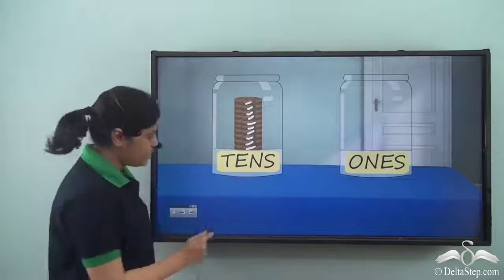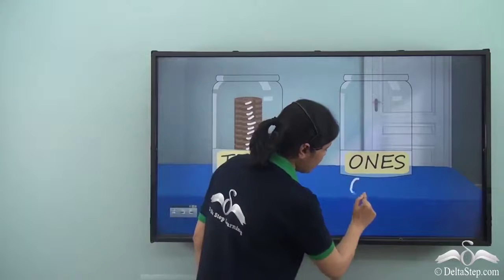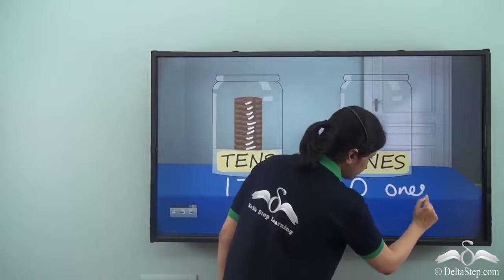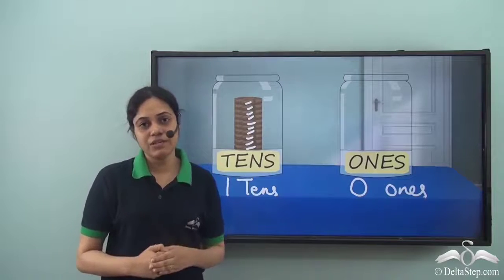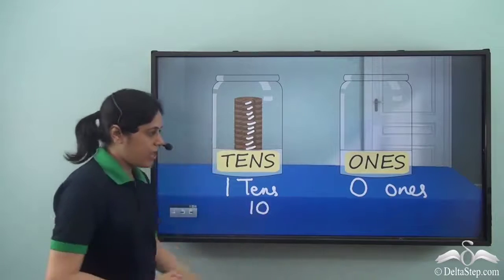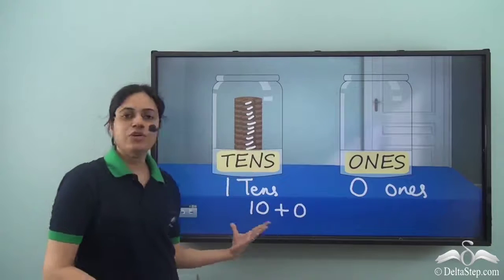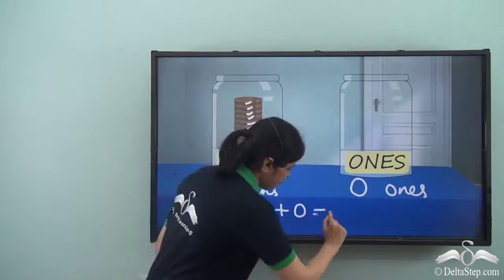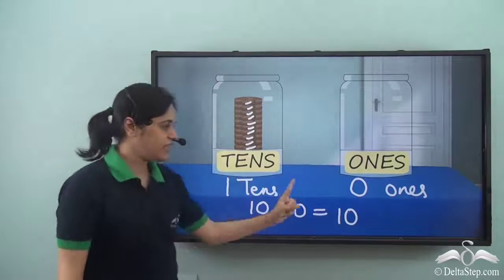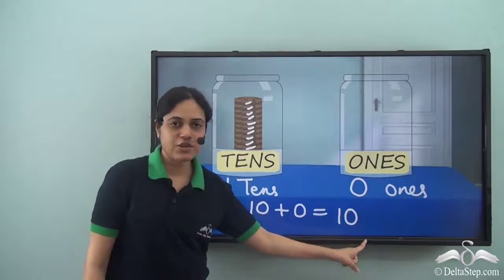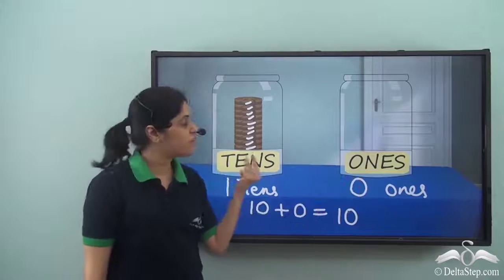So what does this mean? This is one tens. And over here there are no cookies, so zero ones. One tens and zero ones. One tens means ten, and zero ones means zero. And we know that ten plus zero is ten. So there are ten cookies. Ten cookies can be written as one tens and zero ones, which is 'one zero.' There is one tens in this jar and zero ones in this jar, which stands for ten cookies.